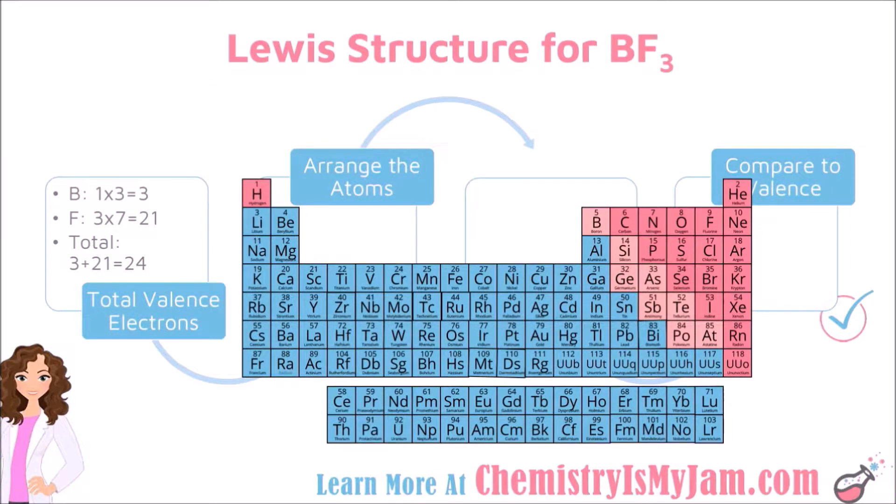We will begin by drawing a Lewis structure for boron trifluoride. The first thing that you should always do is total your valence electrons. As a reminder, there is a trend on the periodic table that helps you figure out how many valence electrons each atom has. The atoms in group 1 have 1 valence electron. These have 2, skip the transition metals, 3, 4, 5, 6, 7, 8 valence electrons.